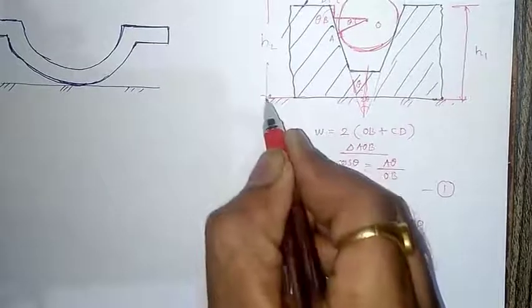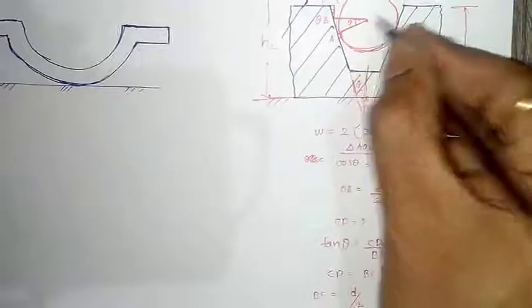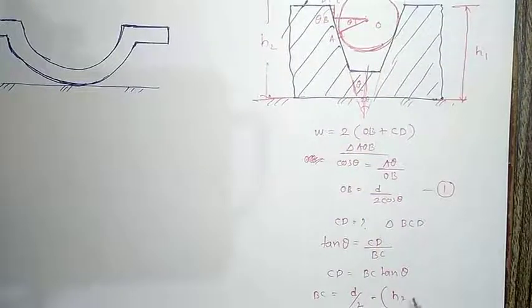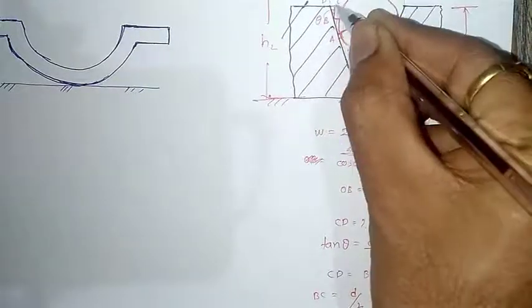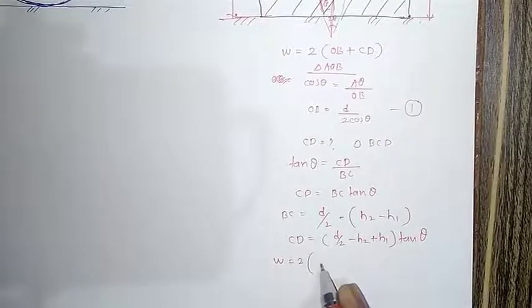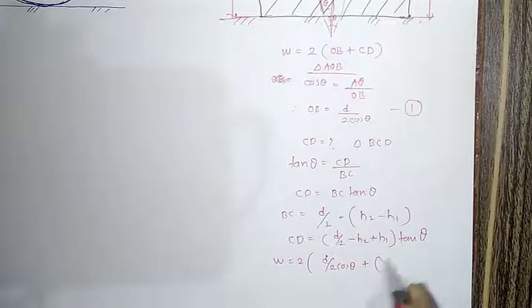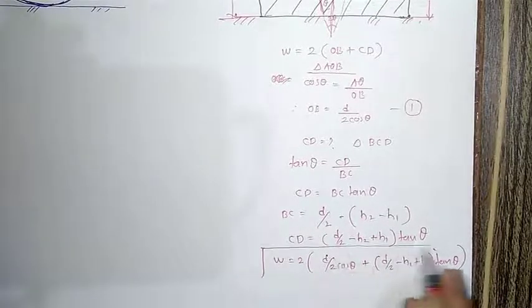BC can be found as the radius of the sphere minus (H2 minus H1). That means H2 minus H1 gives this small distance, and subtracting it from the radius gives BC. Therefore, CD = (d/2 − (H2 − H1)) × tan θ. So the final equation is: W = 2 × [(d / (2 cos θ)) + (d/2 − H2 + H1) × tan θ]. This is the simple equation we have derived.